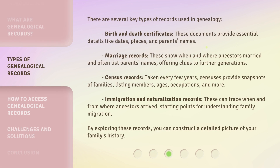There are several key types of records used in genealogy. Birth and death certificates provide essential details like dates, places, and parents' names. Marriage records show when and where ancestors married and often list parents' names, offering clues to further generations.